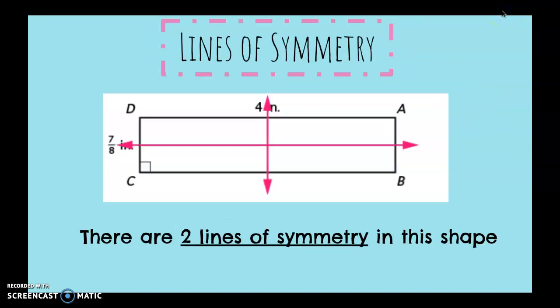Lines of symmetry. We know that there are two lines of symmetry in this shape. First, up and down, or vertically, and then another one horizontally.